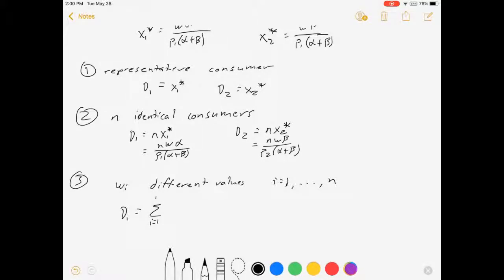So I'm going to sum over i equals one to n and do wi alpha over p1 alpha plus beta, which is just equal to alpha over p1 alpha plus beta times the sum of the wi's. Likewise, demand for good two is equal to beta over p2 alpha plus beta sum of the wi's.